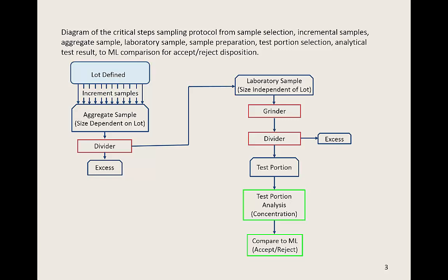Using an approved divider, the aggregate sample can be divided to produce the laboratory sample. The laboratory sample size is specified by the sampling protocol and is independent of lot size. If the protocol calls for a 2 kg sample, then the laboratory sample should be 2 kg for any size lot. The entire laboratory sample should then be comminuted in an approved grinder, ground as finely as possible, and then from that ground material, the test portion should be selected using an approved division method.